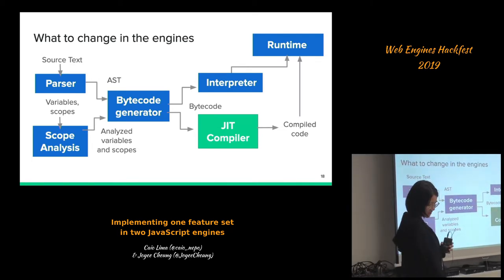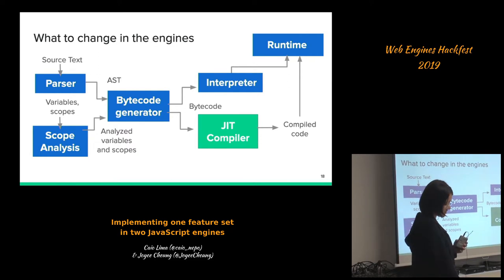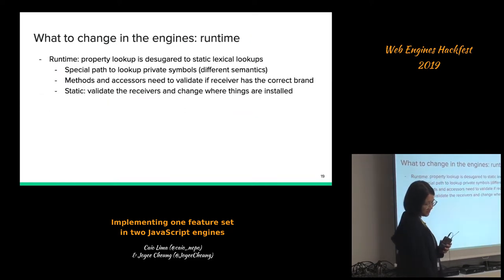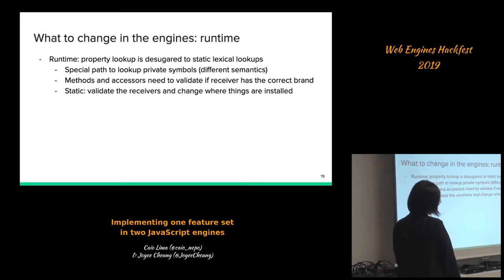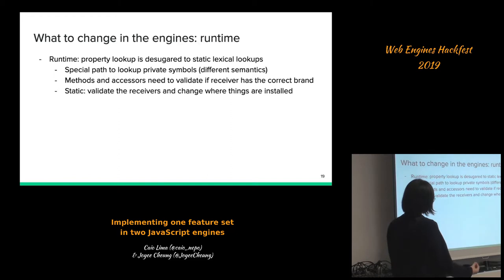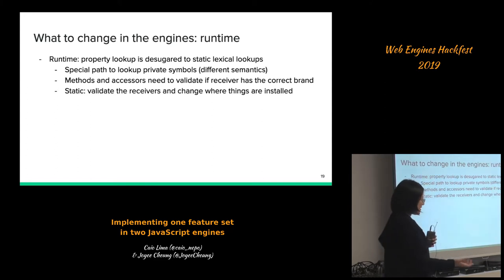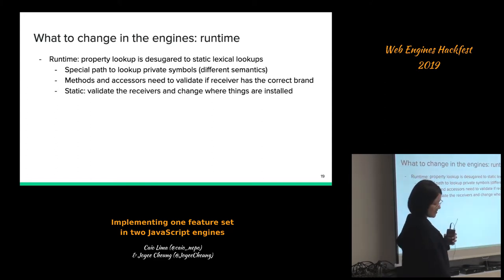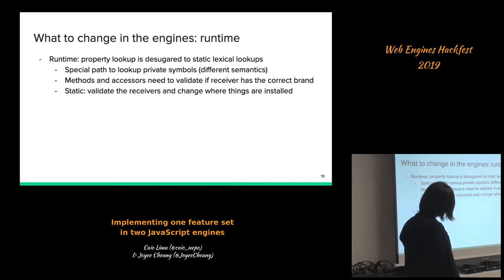We also need to modify the runtime to implement extra semantics. In V8 we need to add special paths to look up private symbols, which has the different semantics Kyle talked about. We also need to validate the receiver for access to private methods and accessors, and do the same for static — in the case of static, the only valid receiver is the class itself. We also need to change where things are installed: for static, on the class itself instead of instances.